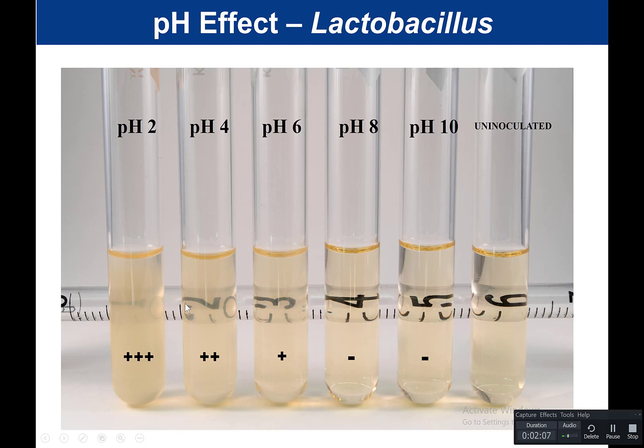At pH 4, it's starting to get even more turbid, so we give that 2+. At pH 2, the number is very much obscured and difficult to see, so we quantitate this as 3+. Looking at this experiment, for Lactobacillus it grew best at pH 2, followed by pH 4, followed by pH 6, and not at all at the alkaline pH.